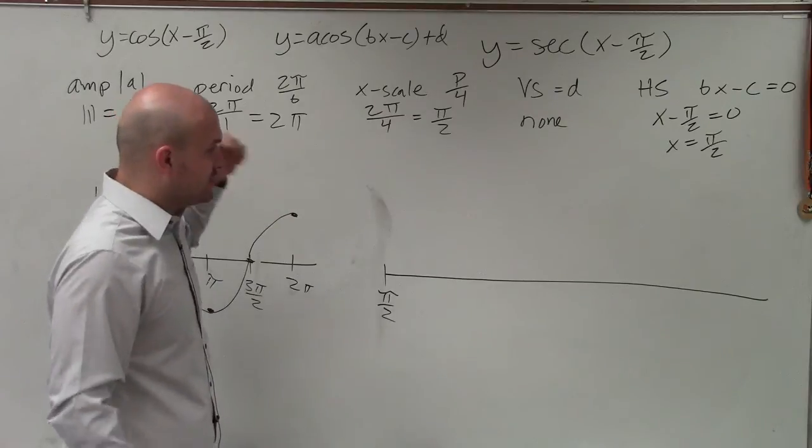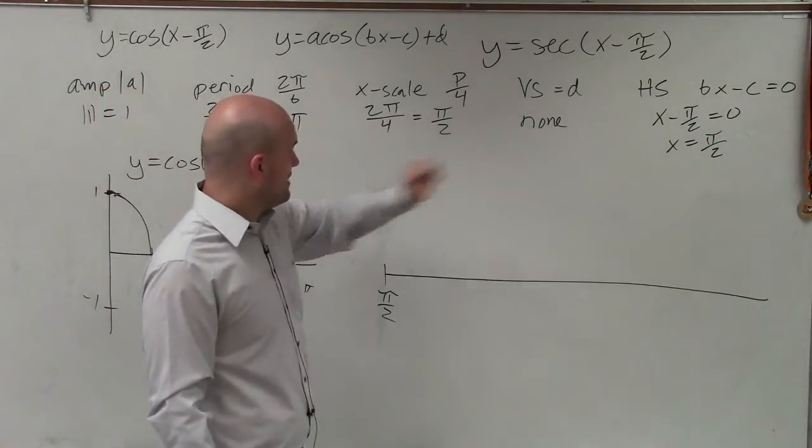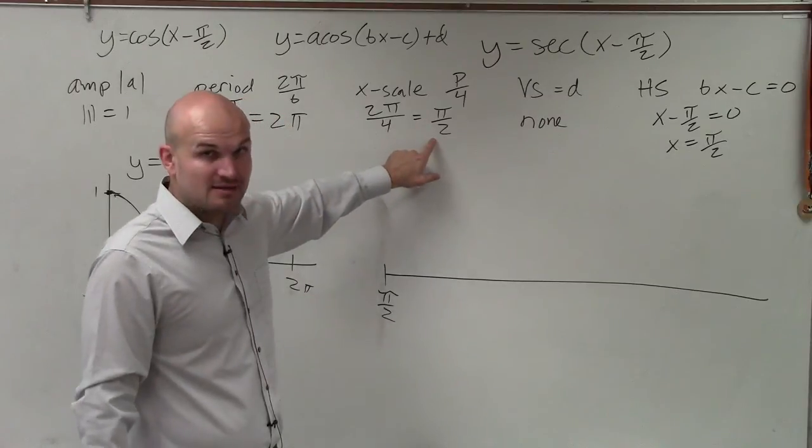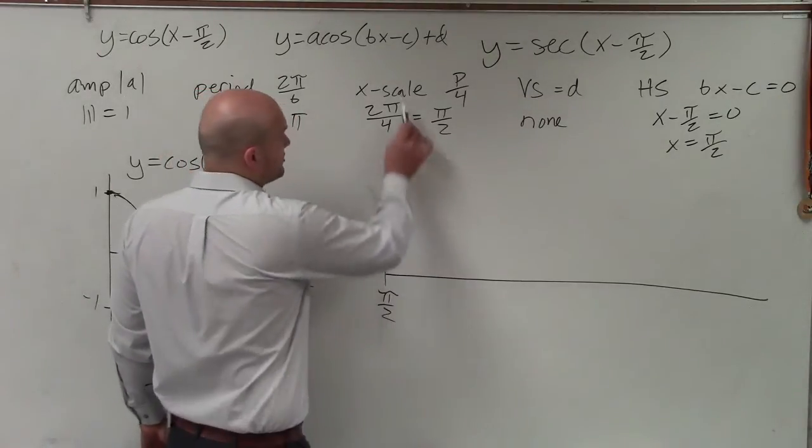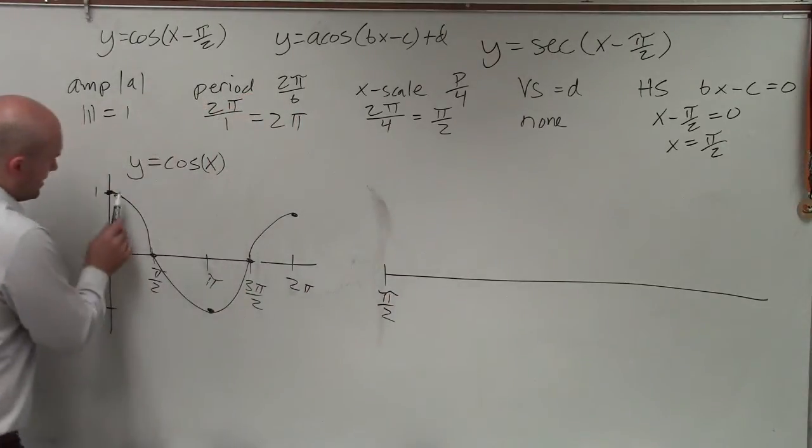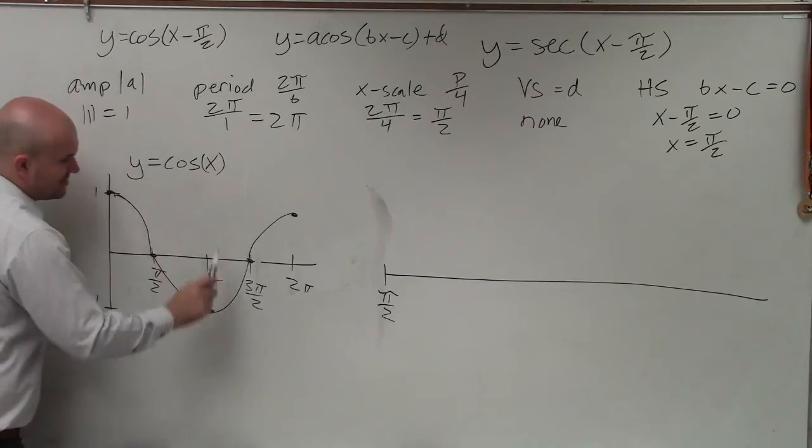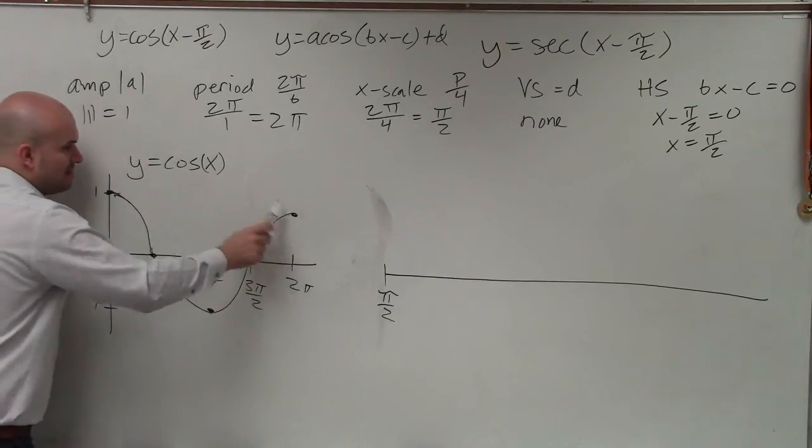Now, the next thing we need to do is we need to create a scale. We know the period is 2 pi. We're starting at pi halves, and the x scale is pi halves. That means, remember, we divide it by 4. So there's four important points from here. We start here. To get to your ending period, there's the intercept, minimum, intercept, maximum. So I'm just going to go intercept, minimum, intercept, maximum.